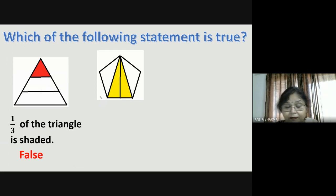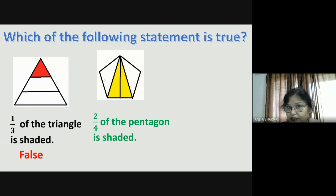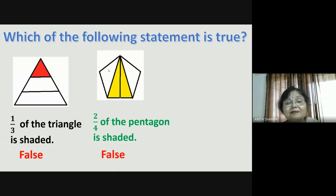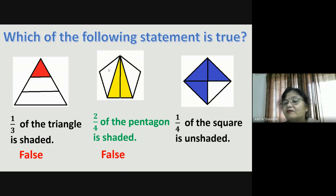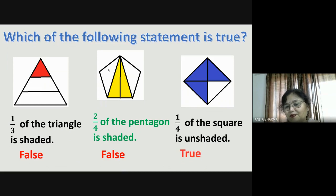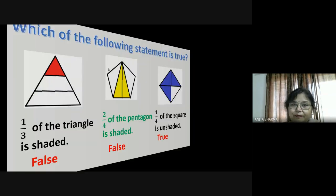Just see once again — here is a pentagon. The statement says that two-fourths of the pentagon is shaded. The denominator is four — it is divided into four parts and the shaded parts are two. Yes, you are right. Let us move to the next slide.